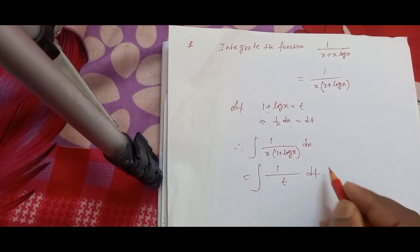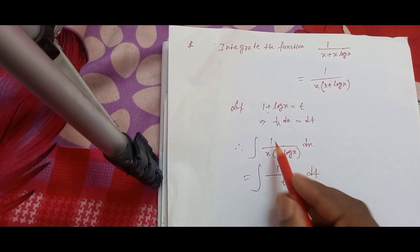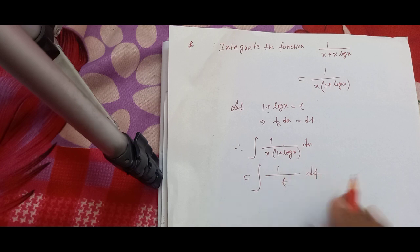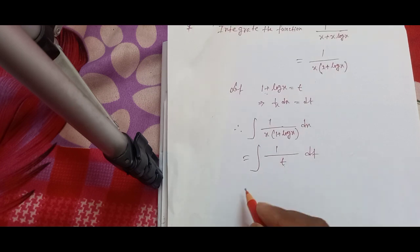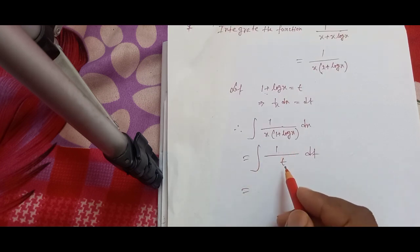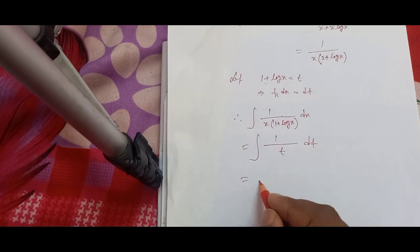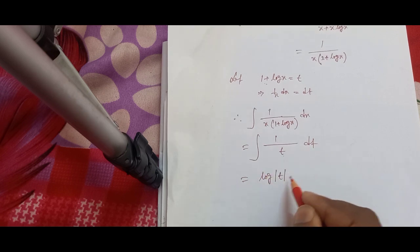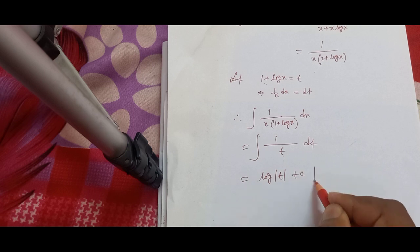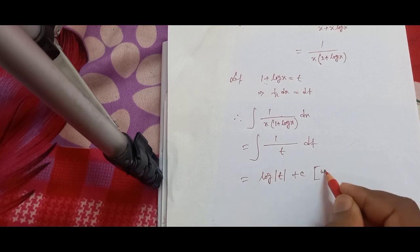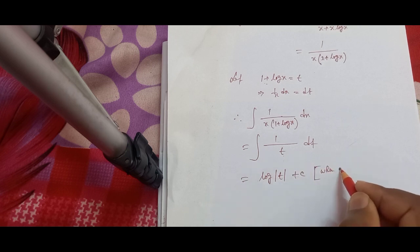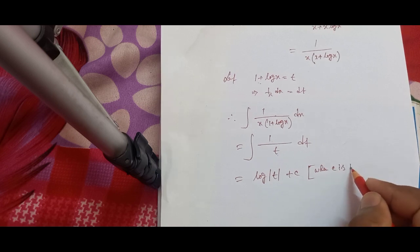This becomes dt. Since 1 + log x equals t, this is the integration of (1/t) dt. Integrating, we get log|t| plus c, where c is the constant of integration.